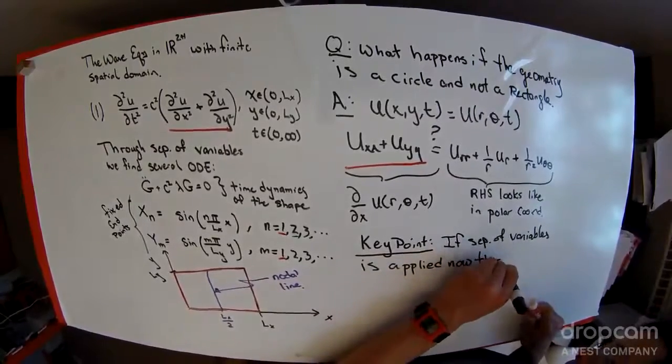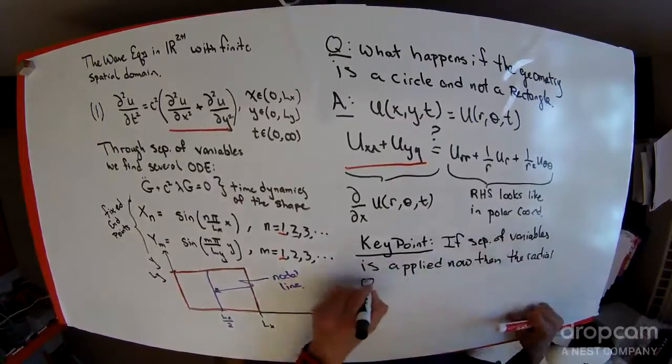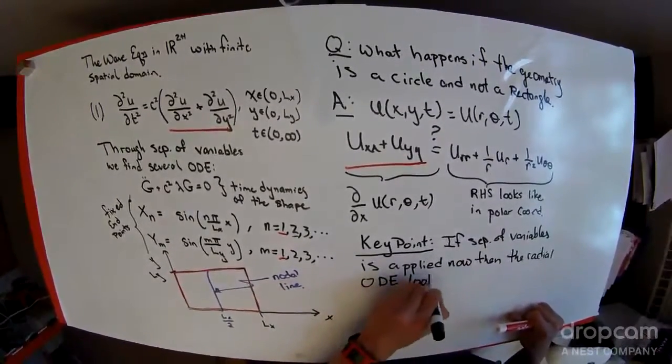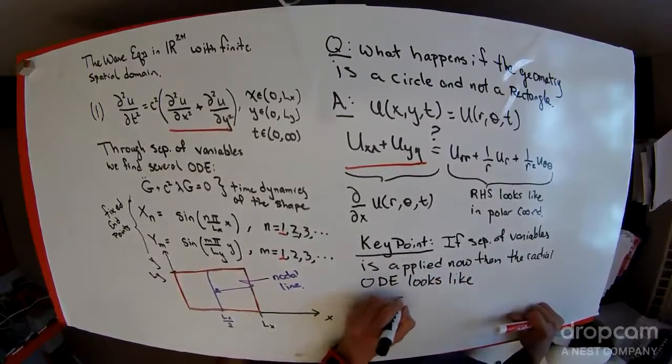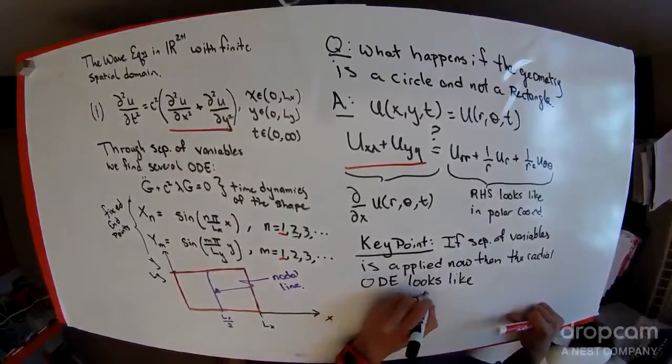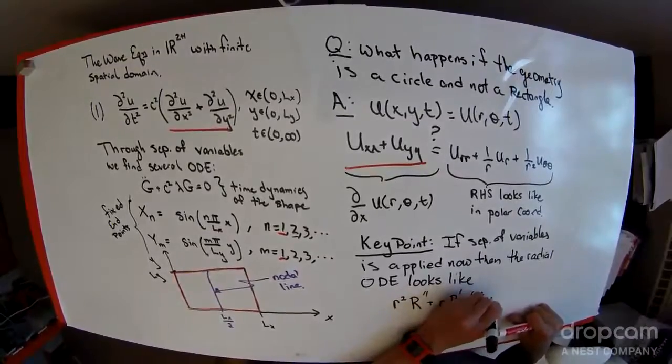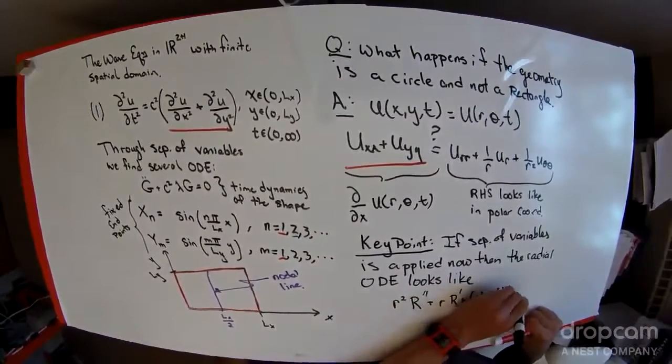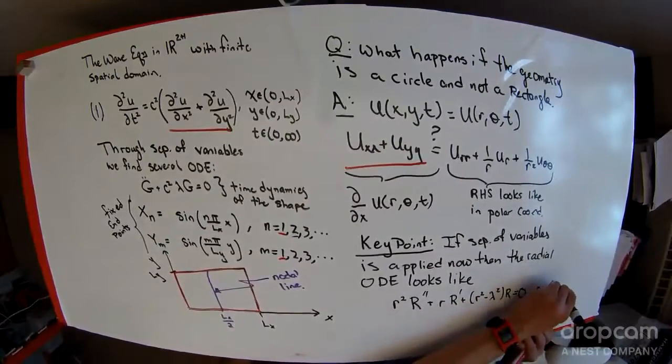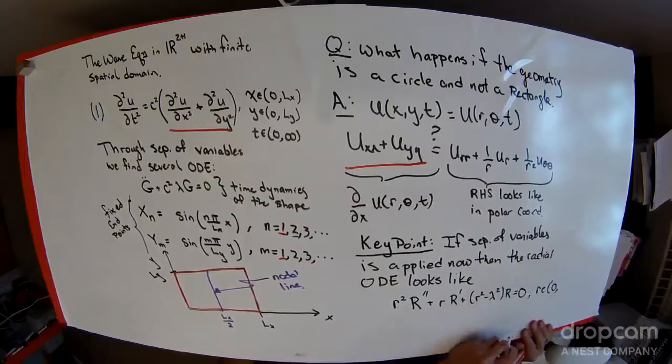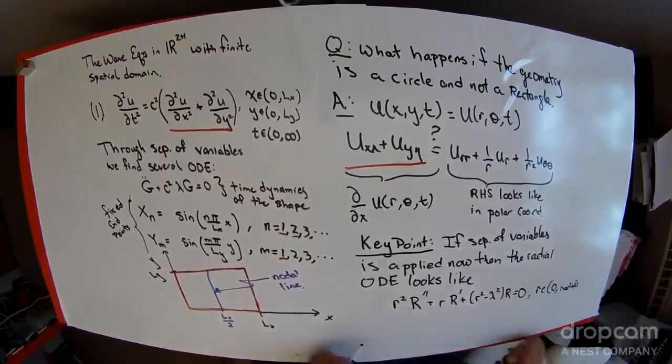If separation of variables is applied now, then the radial ODE looks like r squared times capital R double prime plus r times capital R prime plus r squared lambda minus m squared times capital R equals 0. So this little r goes from 0 to the radius of the circle.